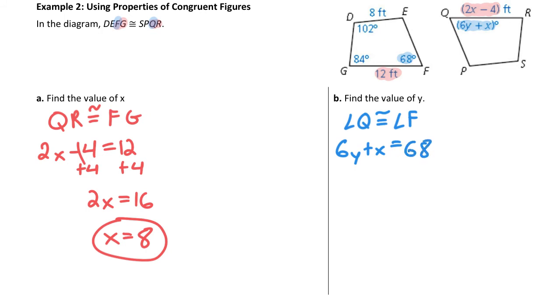And I know what x is. We just solved for it. So x is 8. So 6y plus 8 equals 68. And all I have to do is solve. Subtract 8 from both sides. 6y equals 60. Divide both sides by 6. Y is 10.